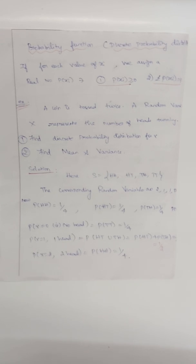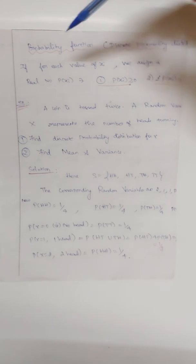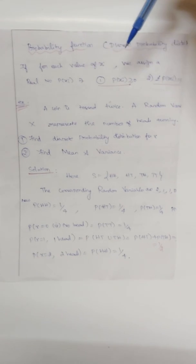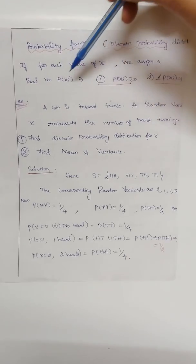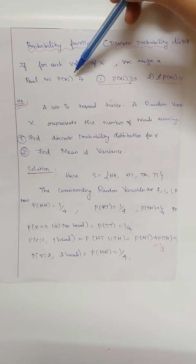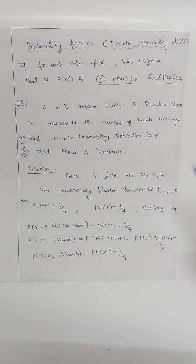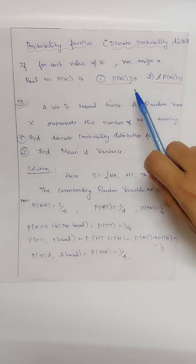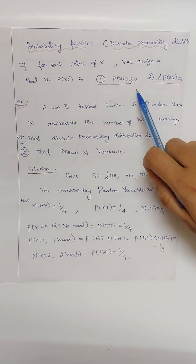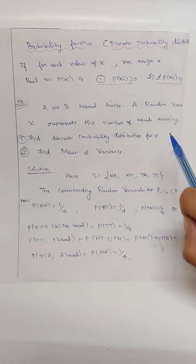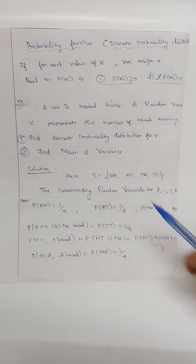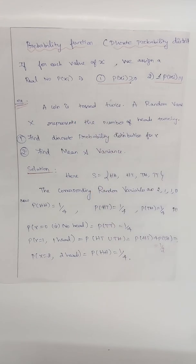Now let's see the probability function — the discrete version. If for each value x_i of the random variable X we assign a real number P(x_i) such that P(x_i) is greater than or equal to zero, and the summation of all P(x_i) equals one.